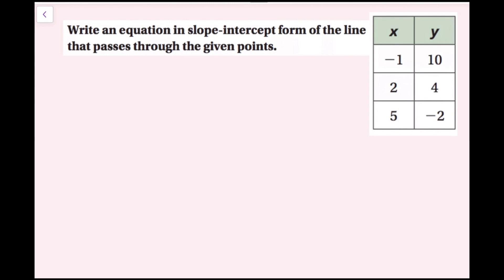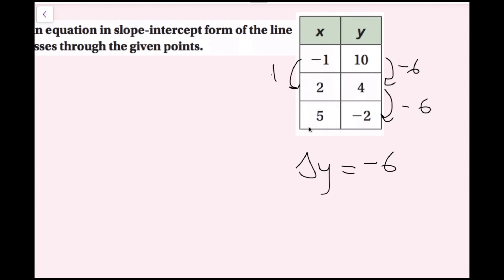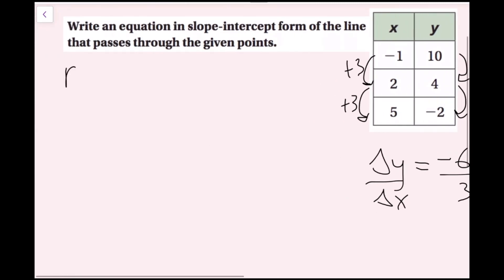In this example, we're going to write an equation in slope-intercept form of the line that passes through the given points. I'm going to show you two ways. The first way uses point-slope form. I need to find the slope from the table — you could pick two ordered pairs, or see the pattern. Each time, y decreases by 6 (change in y is negative 6), and x increases by 3 (change in x is plus 3). So my slope is negative 6 over 3, which is negative 2.